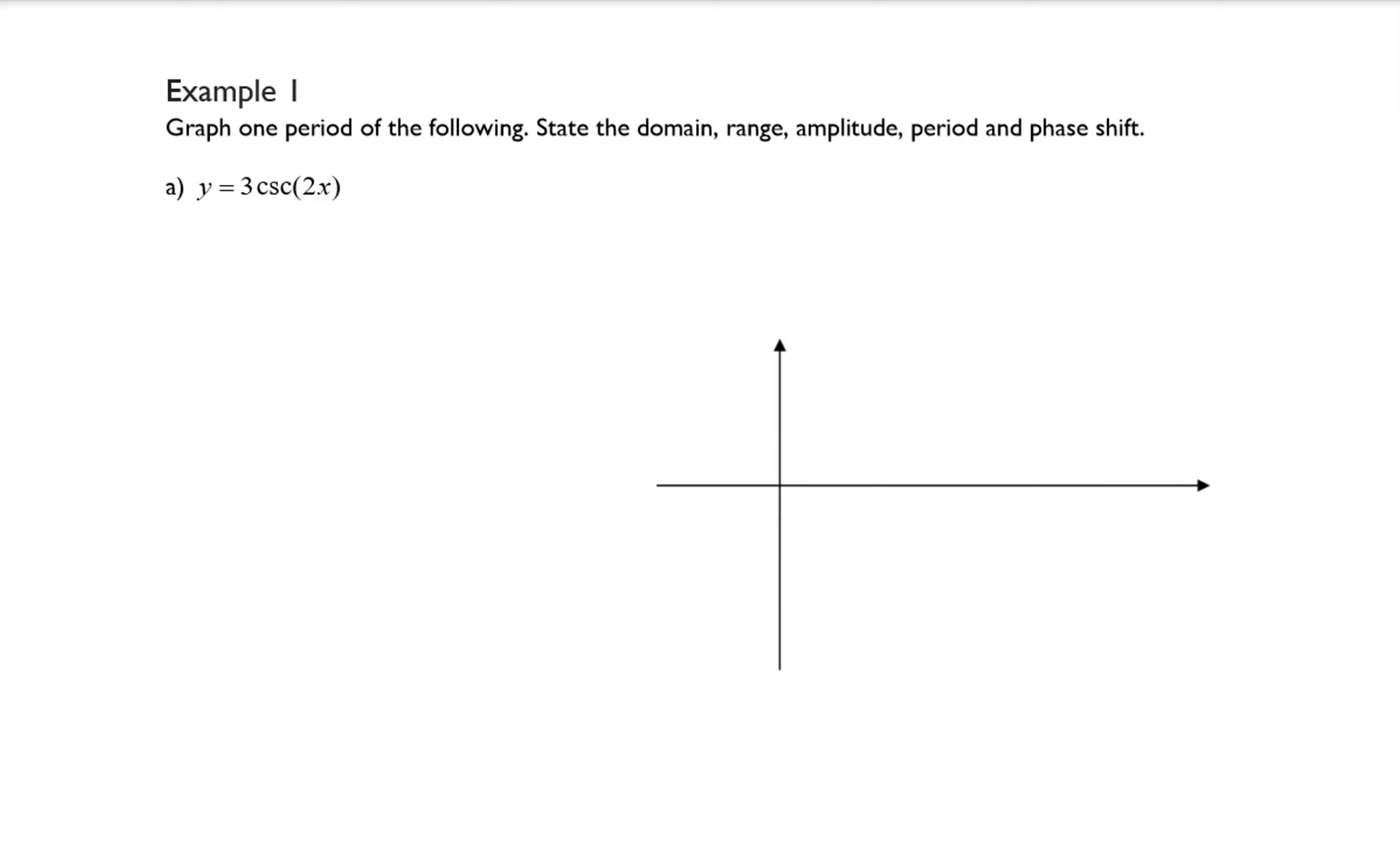Example 1 says graph 1 period of the following. State the domain, range, amplitude, period, and phase shift. So let's go through some of these. We know the amplitude is 3. We know the phase shift is 0.